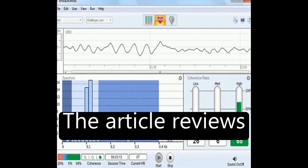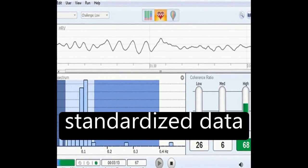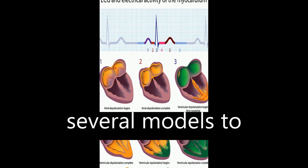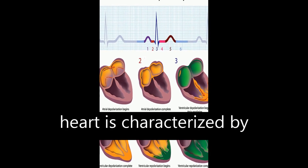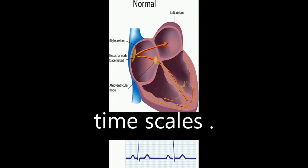The article reviews common time and frequency domain measurements and standardized data collection protocols. Finally, it integrates several models to conclude that a coherent heart is characterized by both complexity and stability over longer time scales.